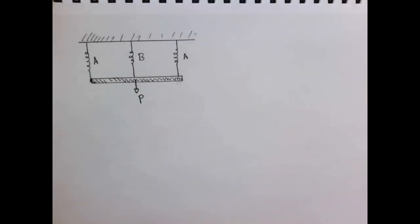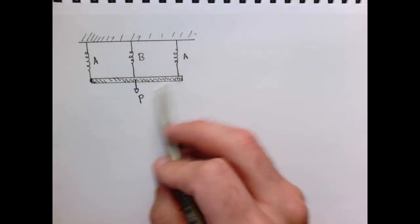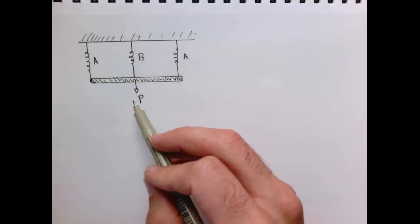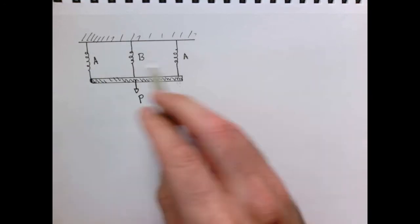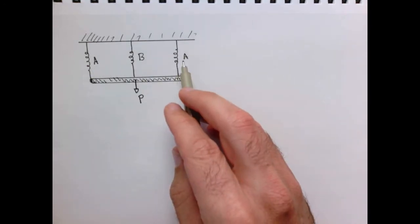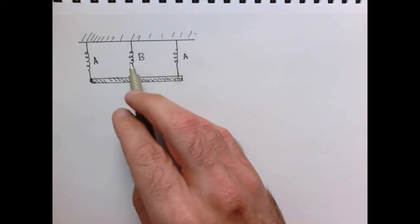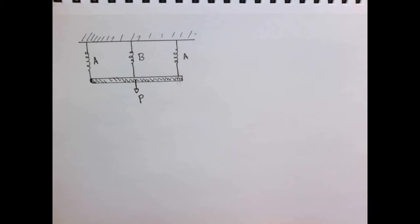Let's look at our first statically indeterminate structure. In this case, we have a simple plate held up by three springs and pulled on with a load P. The two springs labeled A are the same, and spring B is different, so they have different stiffnesses.